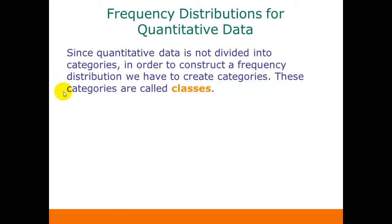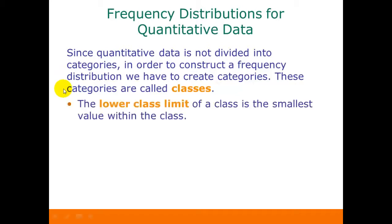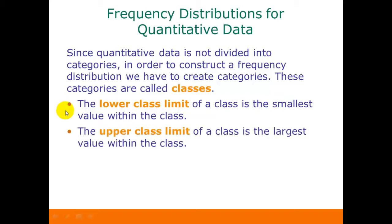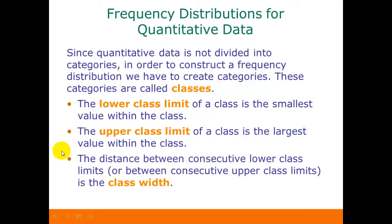What we're going to talk about here is creating the categories or the classes. The lower class limit of a class is the smallest value within the class, and the upper class limit is the largest value within the class. The distance between consecutive lower class limits or between consecutive upper class limits is called the class width.